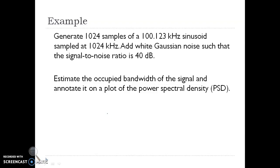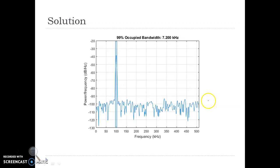For example, consider 1024 samples of a sinusoid are generated and then we add white Gaussian noise such that signal-to-noise ratio is 40 dB. We can estimate the occupied bandwidth of the signal and annotate it on a plot of the power spectral density, i.e. PSD.